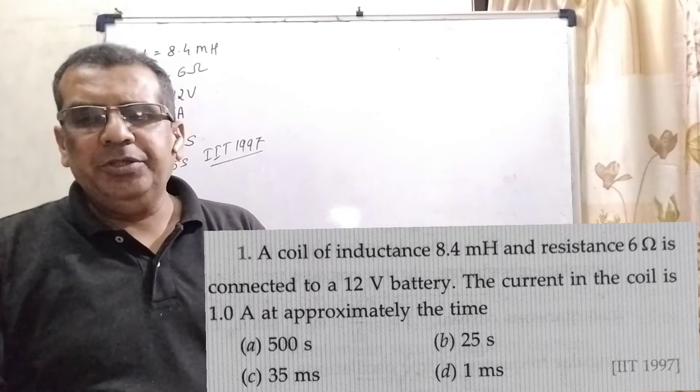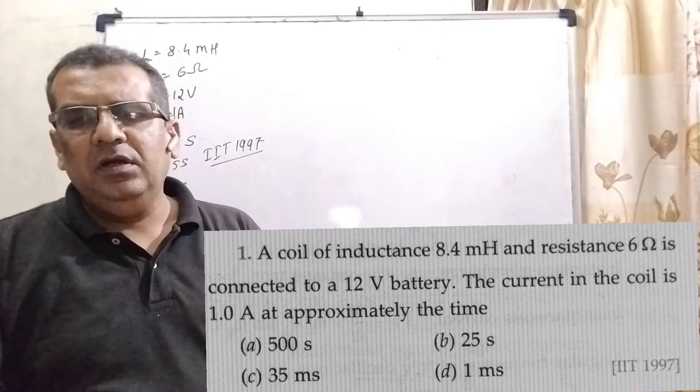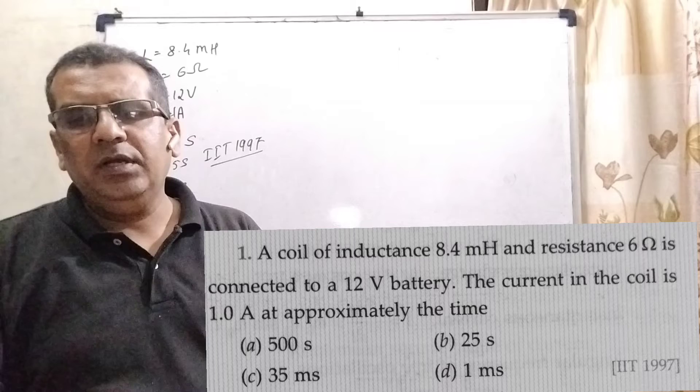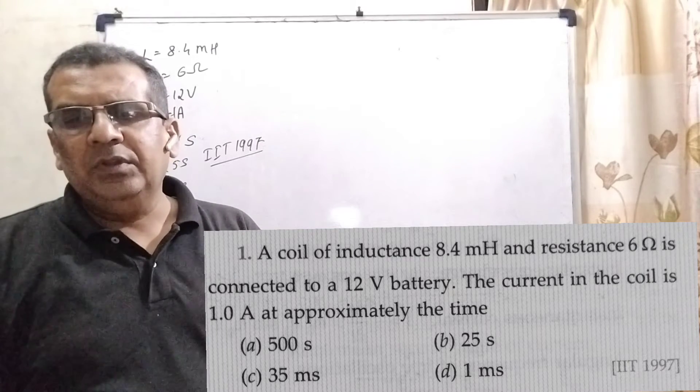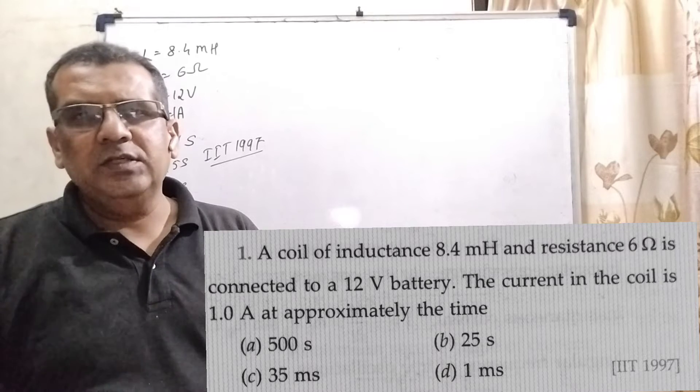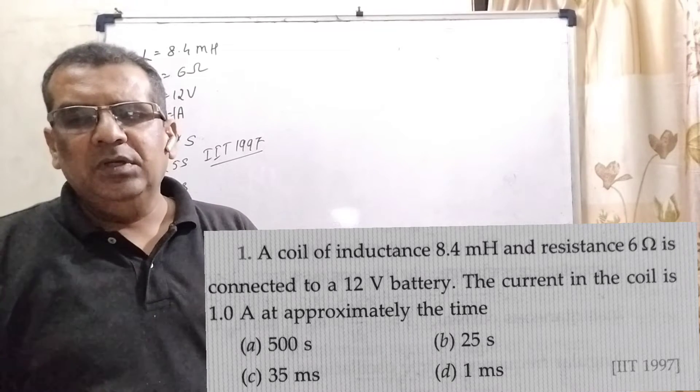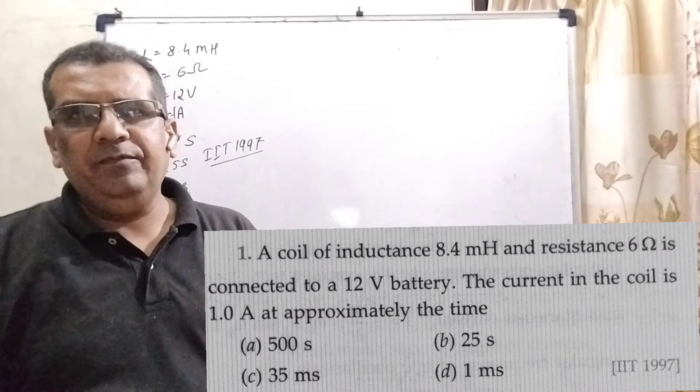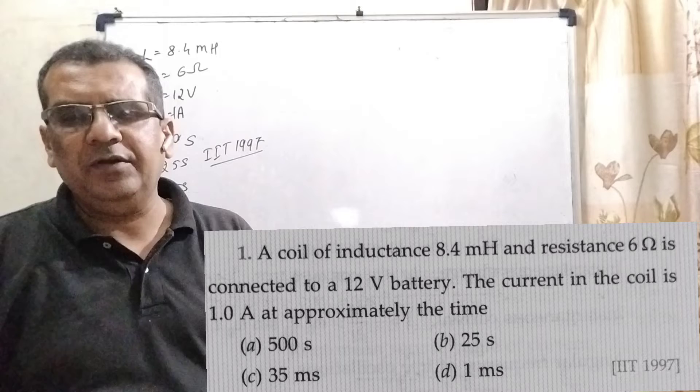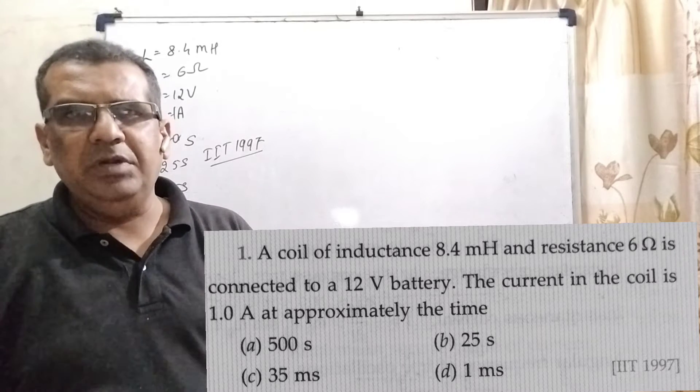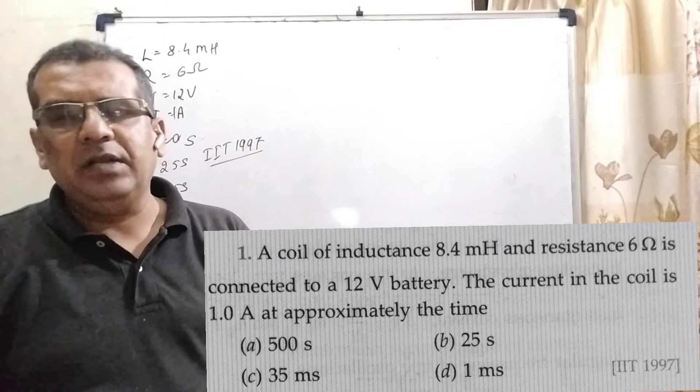Now, here is the question. A coil of inductance 8.4 mH and resistance 6 ohm is connected to a 12 volt battery. The current in the coil is 1 ampere. At approximately the time: option A, 500 second; option B, 25 second; option C, 35 millisecond; option D, 1 millisecond. And this question is asked IIT-1997.